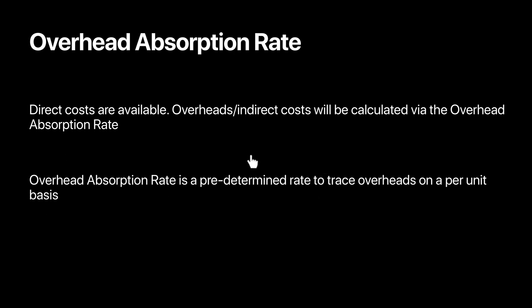Managers calculate this through something called an overhead absorption rate, which is a predetermined rate. Predetermined means that before the business actually starts producing, they already have to estimate how much the overheads or indirect cost will be on a per unit basis. Firms have to estimate their selling price or total cost per unit even before they start producing, because the price is always determined at the start. That is why it's called a predetermined rate.